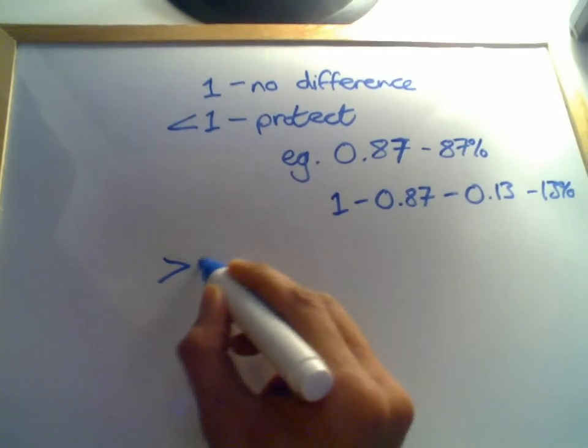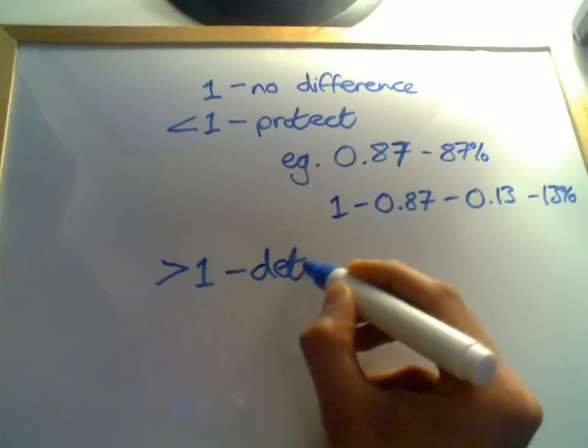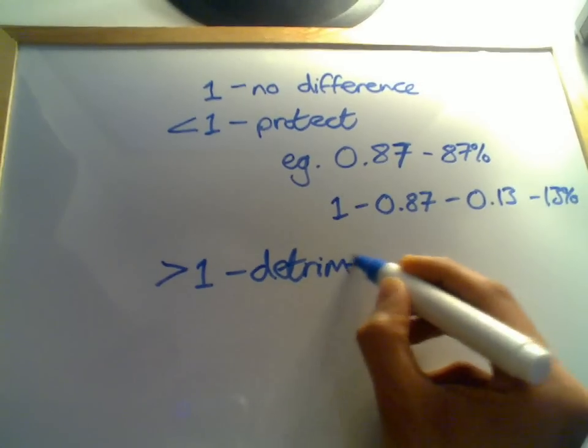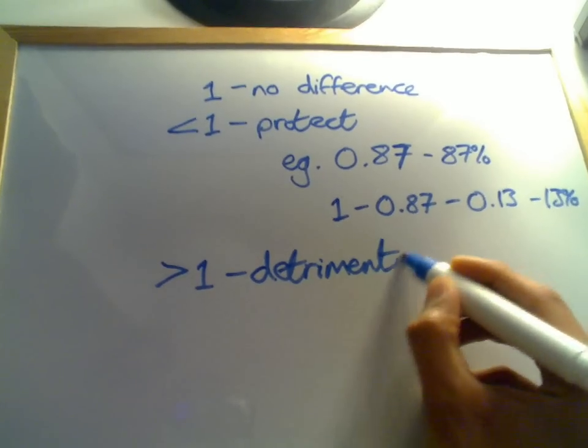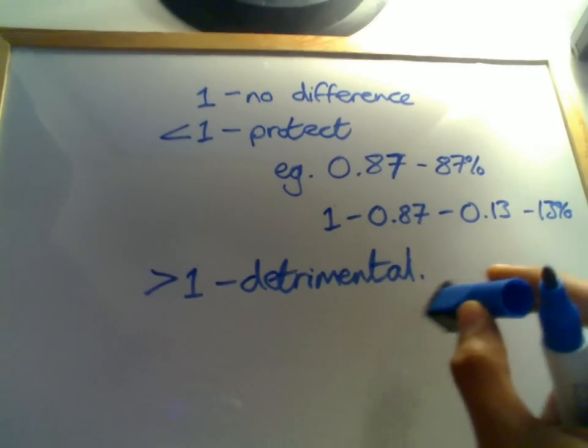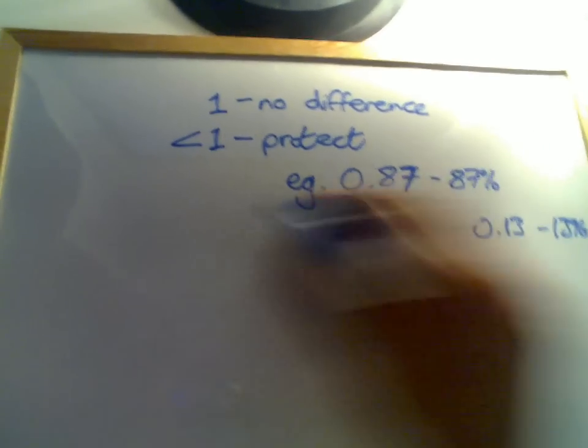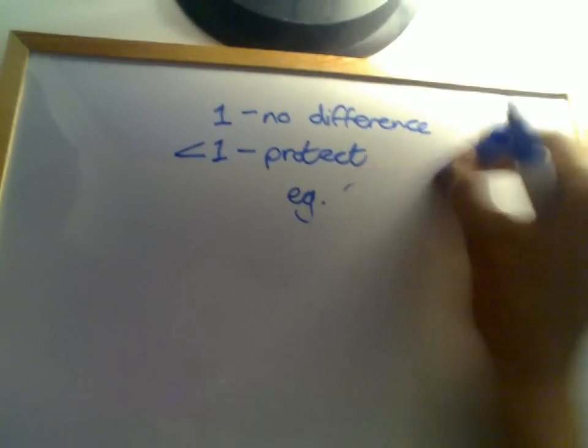If we get a relative risk more than one, then this implies a detrimental effect. So whatever we're doing, whatever intervention we're using, is actually harming more people than it's saving. If we're looking at death, we've actually killed more people with our drug.